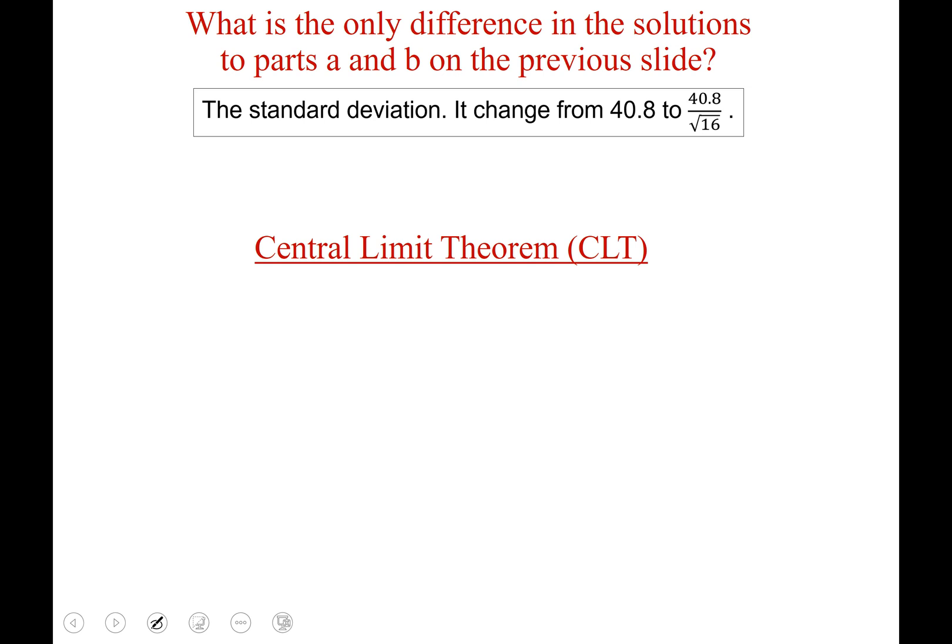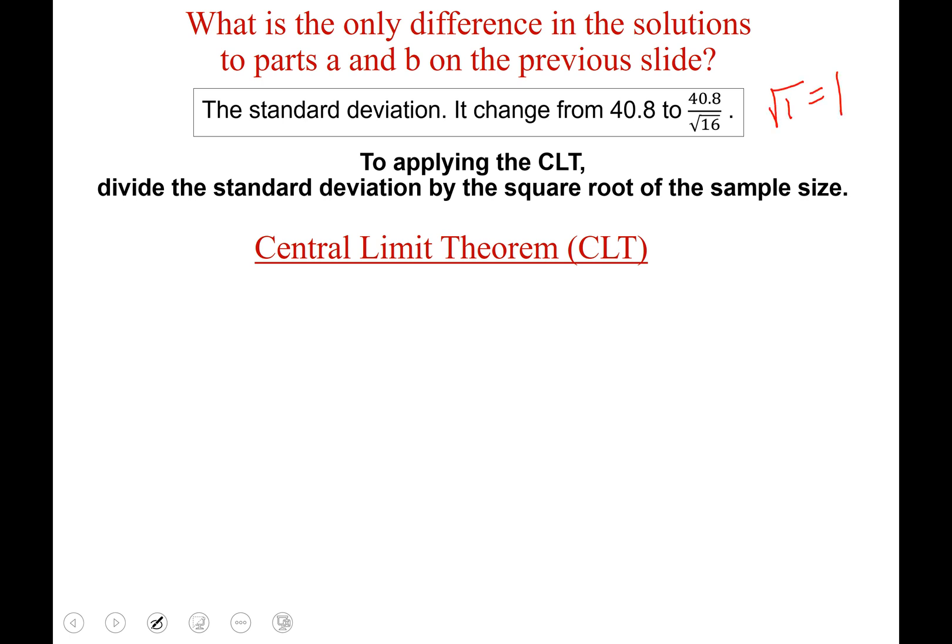So to apply the central limit theorem divide the standard deviation by the square root of the sample size. Now I want to bring up why I talked about the square root of one being one. Well the central limit theorem you'll often hear it stated as sample size greater than one. But if your sample size was one so you take your 40.8 standard deviation and you divide by the square root of one you're dividing by one so you're still getting the 40.8 standard deviation. So just something I wanted to point out there.